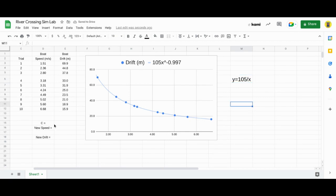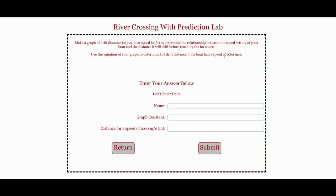The graph constant that we're working with is 105. Now, the new speed that they're asking me to make a prediction with from the sim is 0.6. So let's put that in there, 0.6.